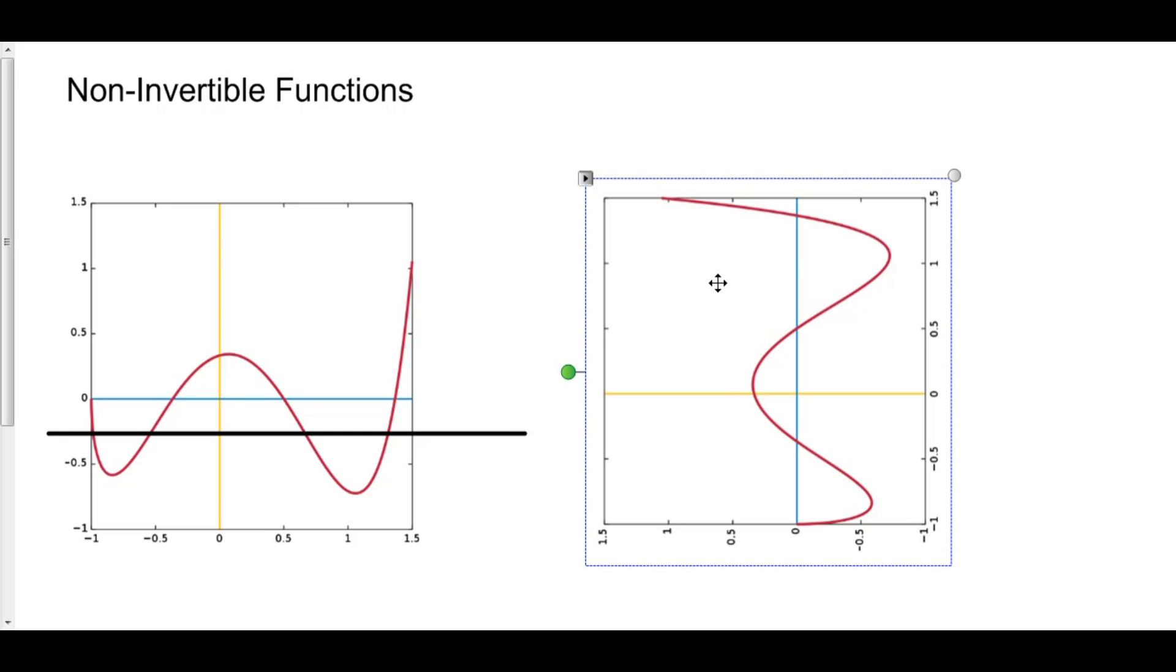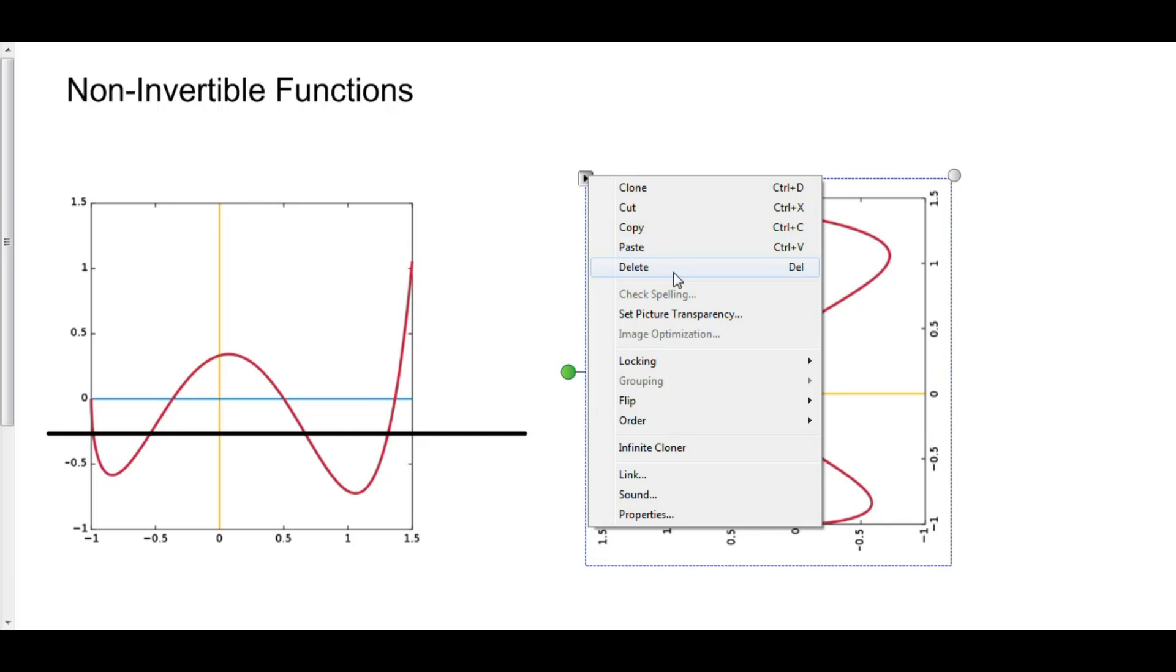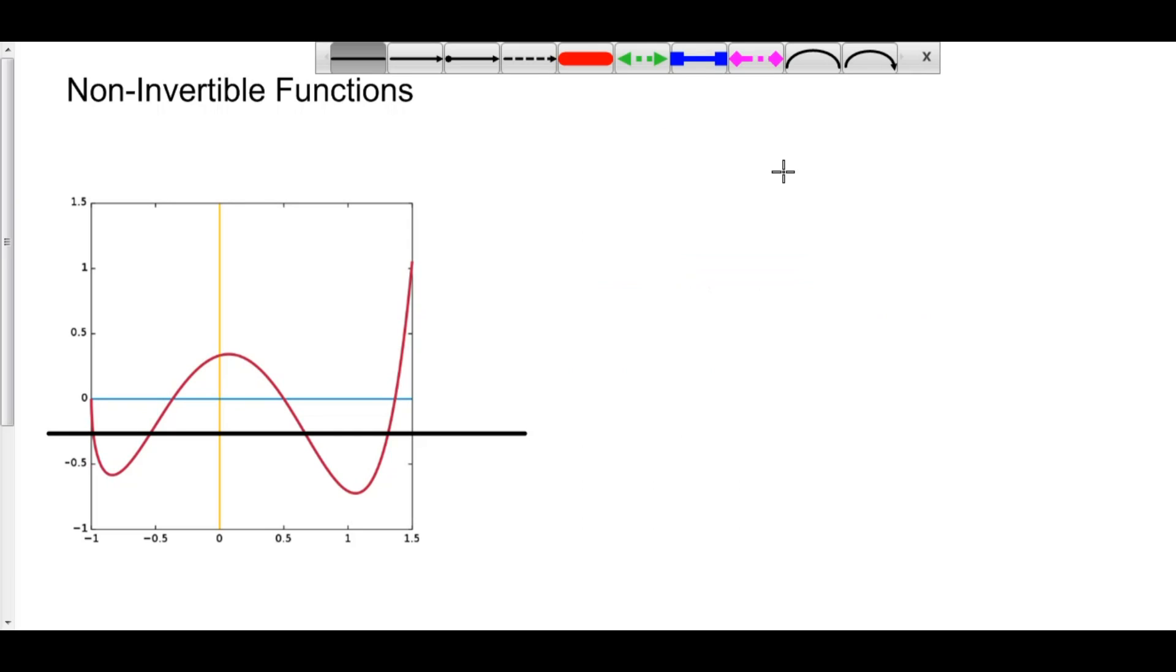What this means, of course, is that a parabola, for example, is not invertible. However, half a parabola is invertible.